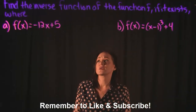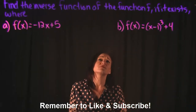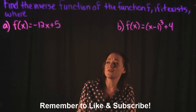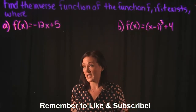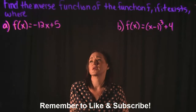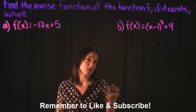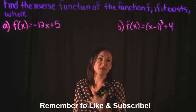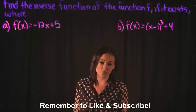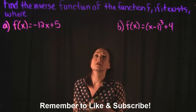For this video, the instructions say: find the inverse function of the function f if it exists. Example A is f of x equals negative 12x plus 5, and example B is f of x equals x minus 1 cubed plus 4. Let's go through the process of finding the inverse function.